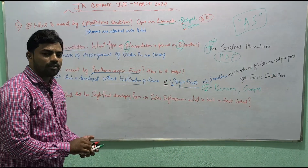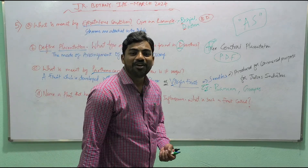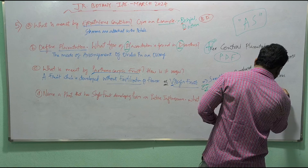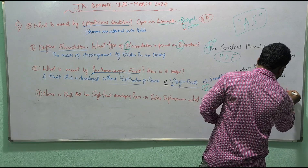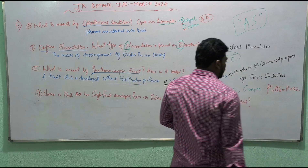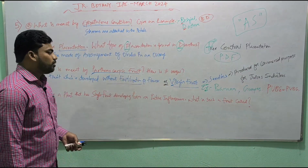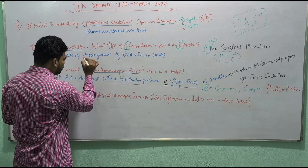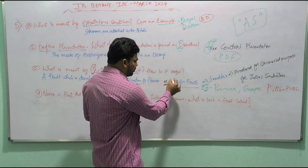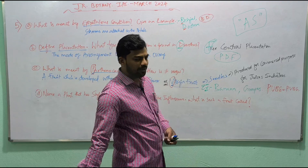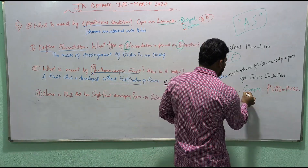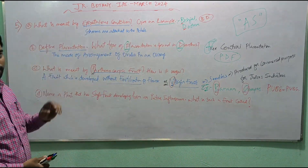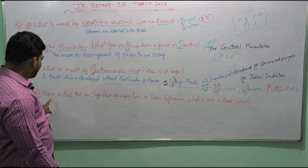To remember this, think of the mnemonic PUBG — our young generation's favorite game. Replace U with V: P for parthenocarpic fruit, V for virgin fruit, B for banana, and G for grapes. So when you see PUBG, replace U with V and you have your answer.